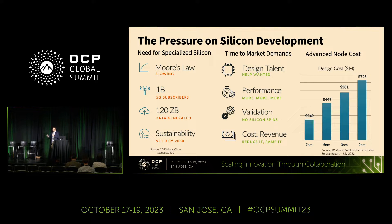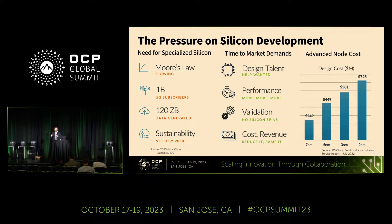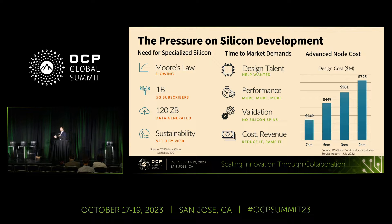There's a need to build more specialized silicon. At the same time, we're seeing a supply shortage of talent that's actually capable of building these really sophisticated devices. It's really hard to build the RTL, to validate, and to produce a high-quality piece of silicon — there's just not enough talent in the industry. Design costs are going up every generation as we go to more advanced nodes, about a 50-50 split between hardware and software. Chiplets are about addressing that hardware challenge of having a reusable component that can lower design cost and get more specialized compute to market.